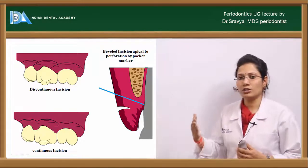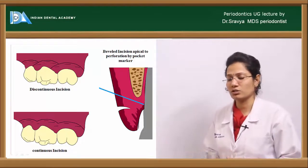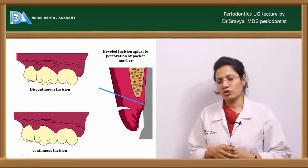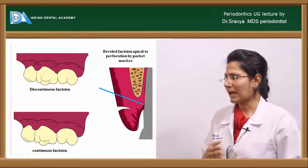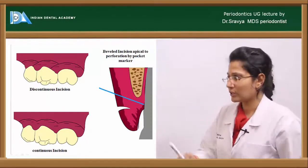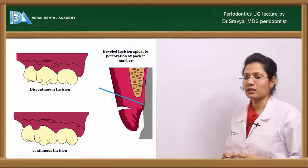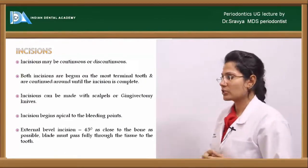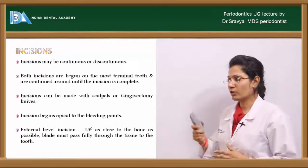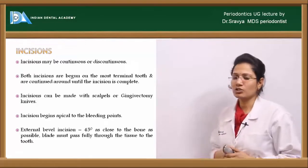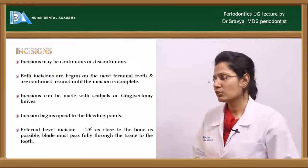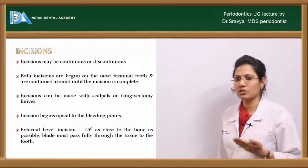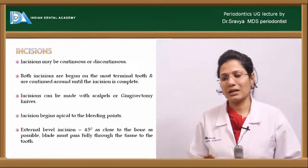Always give an external bevel incision for gingivectomy, placing the blade away from the alveolar crest. Both continuous and discontinuous incisions begin at the most terminal point of the tooth and continue until completed. Incisions can be given with a scalpel or gingivectomy knives, especially Kirkland's knife. Incisions begin apical to the bleeding points, with the blade placed at a 45-degree angle toward the alveolar bone.